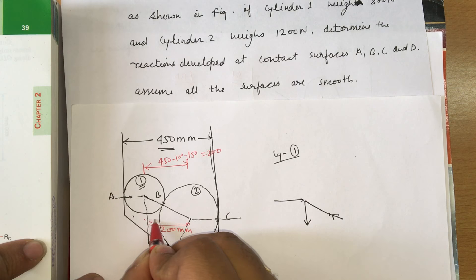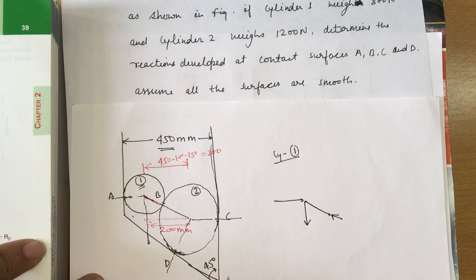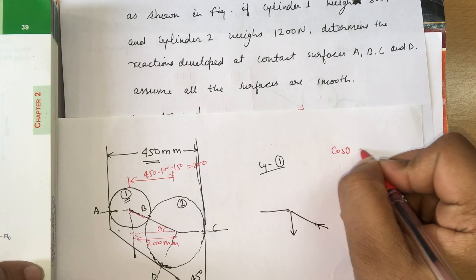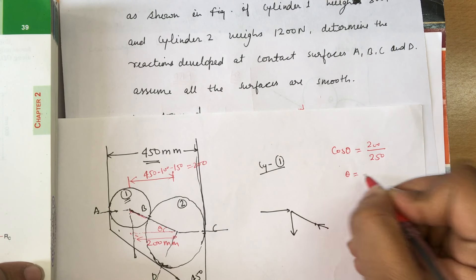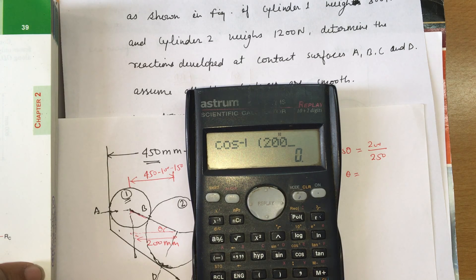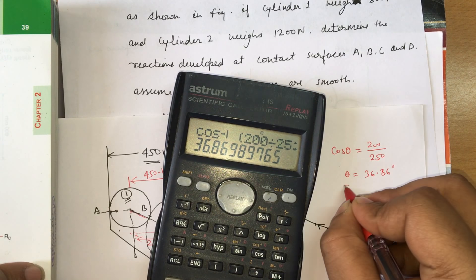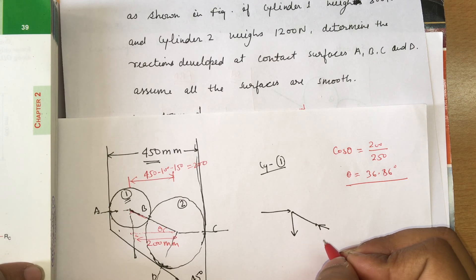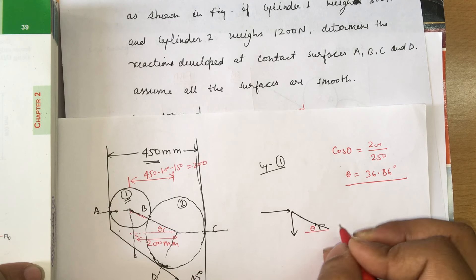The distance between centers along the line of action is the sum of the radii: 100 plus 150 equals 250 mm. Applying trigonometry, cos θ equals base over hypotenuse, so cos θ equals 200 divided by 250. This gives θ equal to 36.86 degrees. Once we know this angle, we can calculate all the forces.